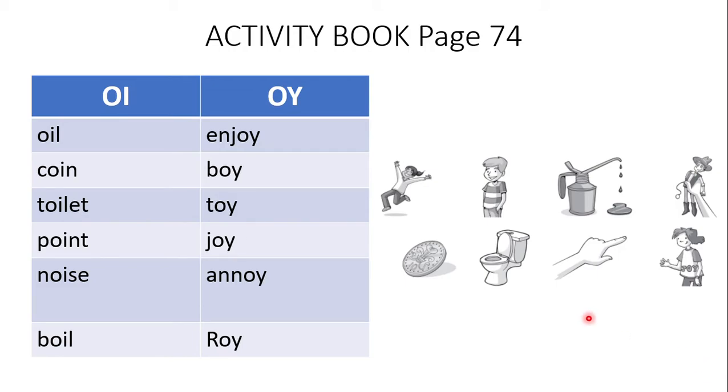The first picture we can see the girl having fun, so this is enjoy, with oy. Let's see the next one. This is a boy, with oy. The next picture is of an oil pot, so this picture goes with the oi word: oil.